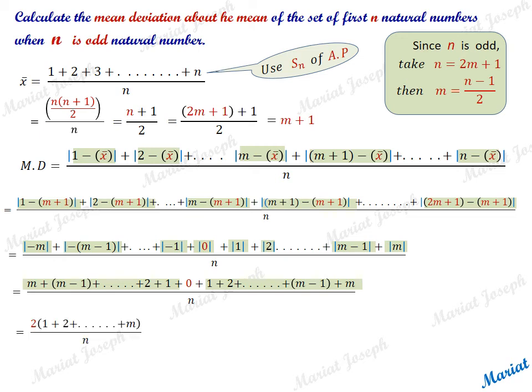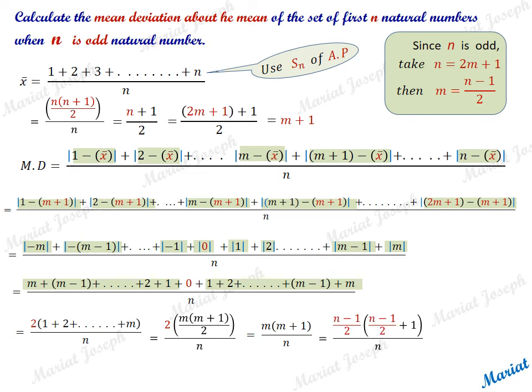The sum of the deviations, using the arithmetic progression formula, gives 2 times m times (m+1)/2, divided by n. This simplifies to m(m+1) divided by 2n. Replacing m as (n-1)/2, we get (n-1)/2 times ((n-1)/2 + 1) divided by n. Simplifying further, the mean deviation equals (n² minus 1) divided by 4n.